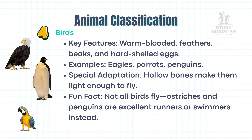Birds: Key features — warm-blooded, feathers, beaks, and hard-shelled eggs. Examples: eagles, parrots, penguins. Special adaptation: hollow bones make them light enough to fly. Fun fact: not all birds fly — ostriches and penguins are excellent runners or swimmers instead.